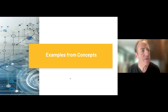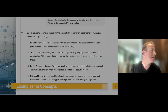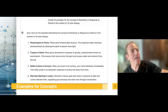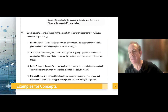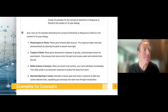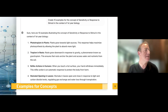Ethan Mollick, a professor at Wharton, talks a lot about using generative AI to generate multiple examples to share with students from a specific concept. I did this example from first-year biology — I gave the concept of sensitivity, a response to stimuli, and these are the examples it provided. One challenge is I'm not trained in biology, so I'm not sure of the quality. That's why we always need a human in the loop — someone with expertise to assess, sort, and evaluate the examples.